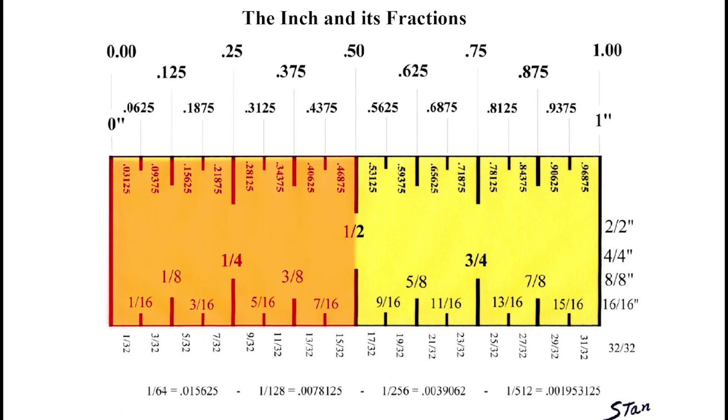Dividing point five zero by two, you get point two five. One quarter inch equals point two five. Do you see the pattern? So in the inch, you have zero, point two five, point five zero, point seven five, point one zero zero, or an inch.